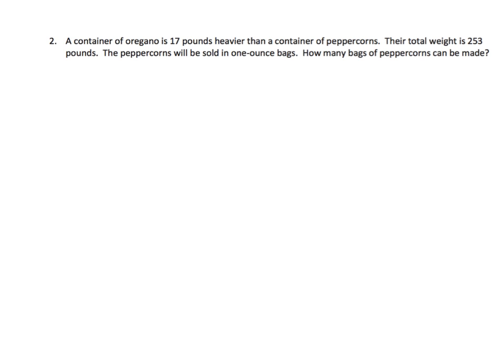Problem 2 from Module 2, Lesson 15. There's a word problem. Let's read it. A container of oregano is 17 pounds heavier than a container of peppercorns. Their total weight is 253 pounds. The peppercorns will be sold in one ounce bags. How many bags of peppercorns can be made?